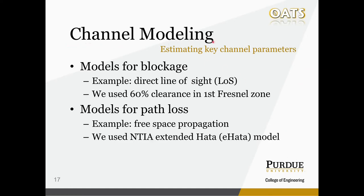Channel modeling gives us a way to estimate channel conditions like path loss based on the wireless environment. In our work, we are interested in two things. First, how helpful are UAVs in preventing blockage? For this, we will look at a very simple model, the direct line-of-sight model, as an example, and then introduce the criterion we used: 60% clearance in the first Fresnel zone. Second, will UAV-aided data relay improve the communication link quality? We will detect this via path loss, because a decrease in path loss directly indicates a better communication link. We will look at the free space propagation model and then move on to the NTIA Extended HATA model, or EHATA model for short.